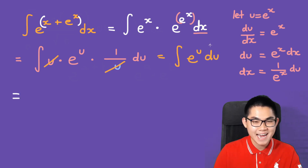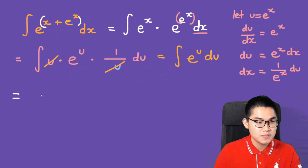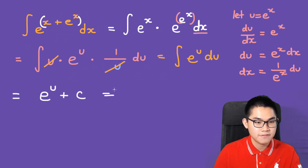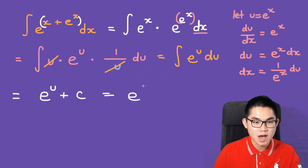What is the antiderivative of e to the power of u? It's going to be e to the power of u plus C. The final step is to substitute u back to our original x variable. So here we have e to the power of e to the power of x plus C.